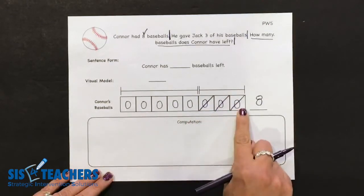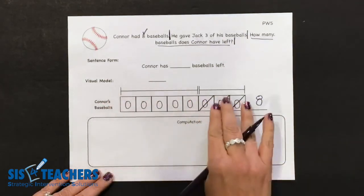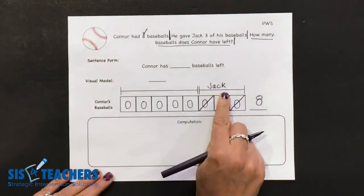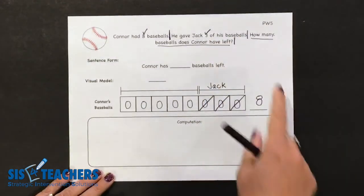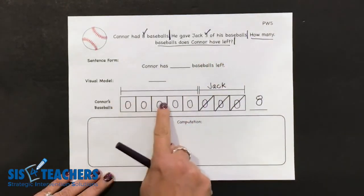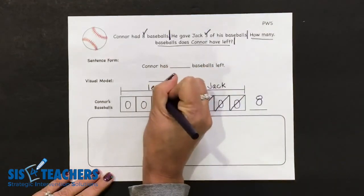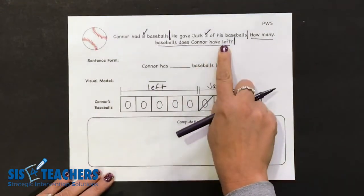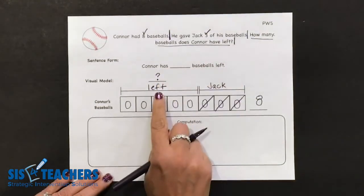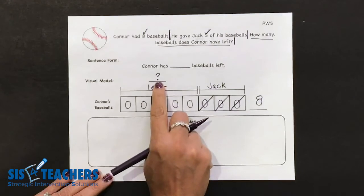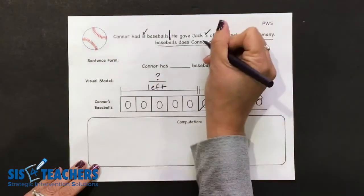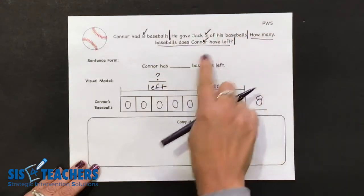We want this drawing to tell the story problem just from looking at the model without the words. The question mark is asking how many does he have left, so this bracket needs a label indicating the baseballs that Connor has left. The scaffolded journal has a line here for students to write their question mark. The idea is to get them to see that that's the question — we don't want the answer here. We want them to really think this process through and then put the check. We had our three chunks, we have our three checks.